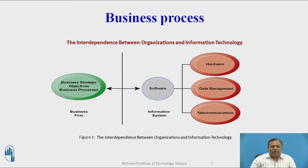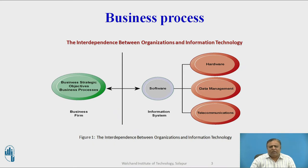First of all, we are going to see business process. This is a diagram of the interdependence between organization and information technology. The software part is the middle part, called the information system, which is running in the organization. The leftmost part is the organization, and the rightmost part is connected — software is connected to hardware, telecommunication, and data management technologies.